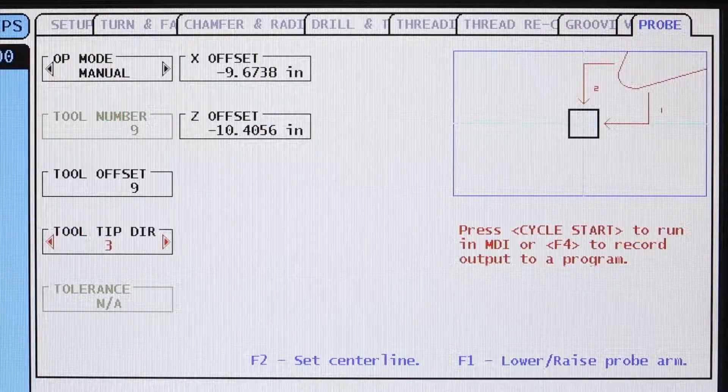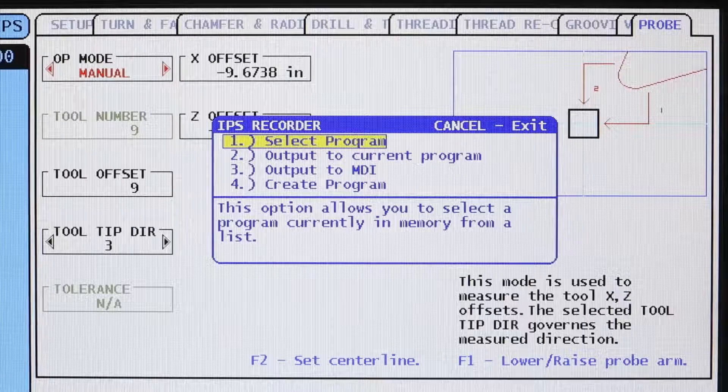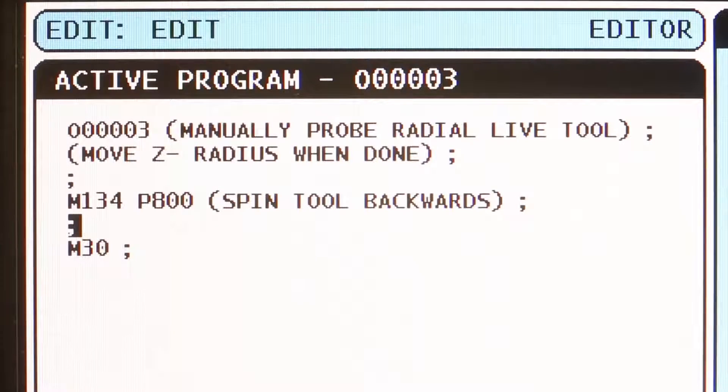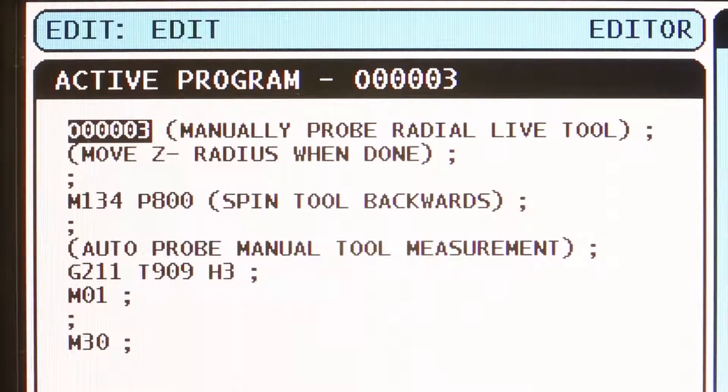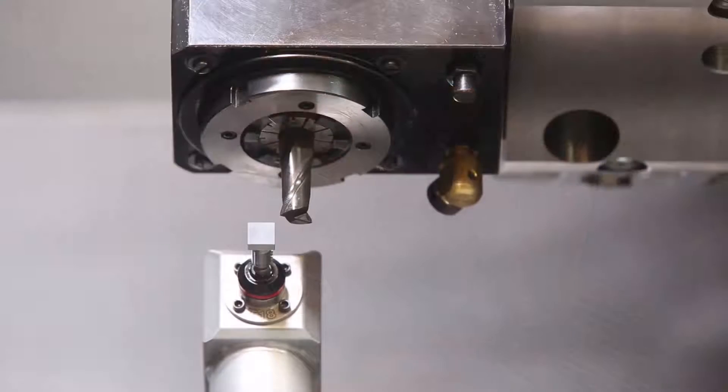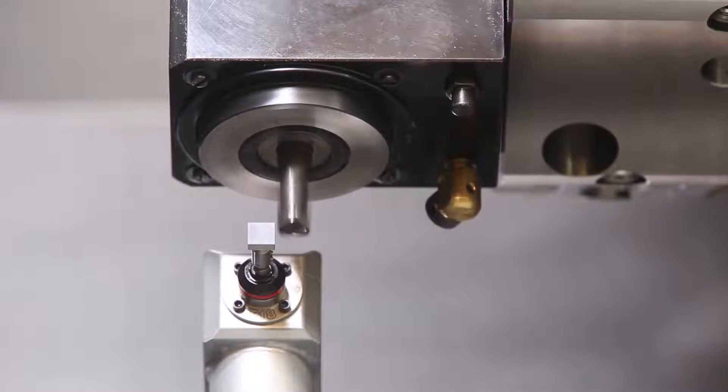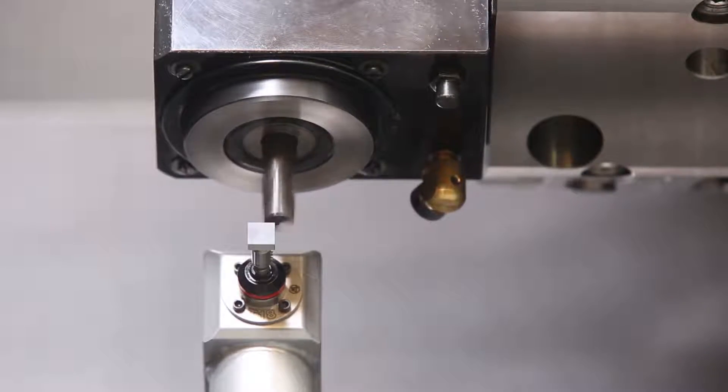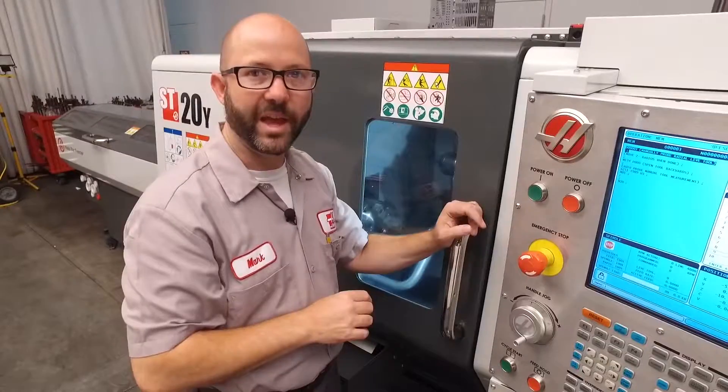So I follow the directions on screen, press F4 to record output to a program. Now I just insert this code into my program right after my M134 and we're ready to run. Let me press cycle start and we'll see what it does. That looked perfect. It touched off on the side of the tool and the tip of the tool on the X.